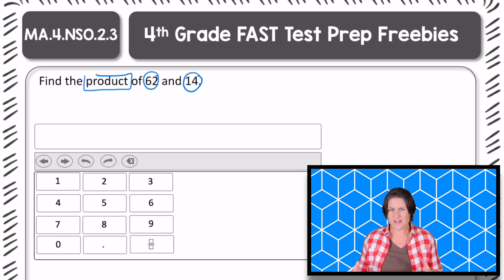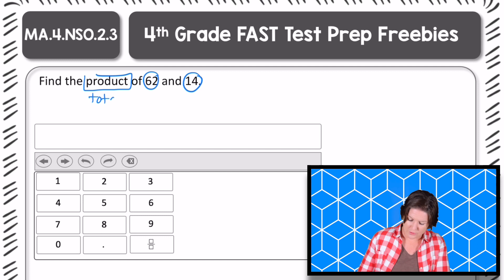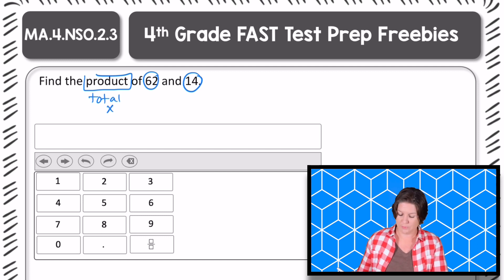But first, let's talk about what that word product means. What does it mean to find the product of something? Yeah, it means that we need to multiply to find the total. It's when we find the total when we multiply.